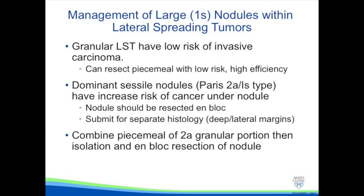Most granular lateral spreading tumors have a low risk of invasive carcinoma, and because of this they can be resected in multiple pieces with low risk and high efficiency. However, when one identifies a granular lateral spreading polyp with a dominant sessile nodule — Paris classification 2A1S type — these have an increased risk of cancer under the nodule. In these cases, the nodule should be resected en bloc and submitted for separate histology to evaluate for deep and lateral margins.